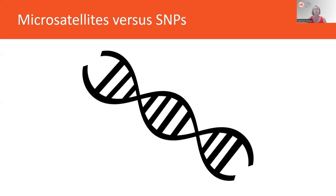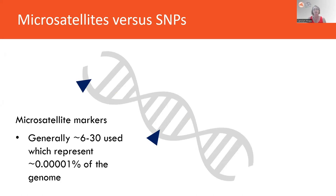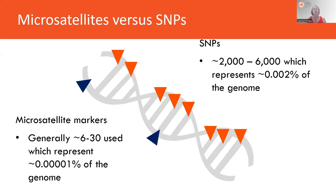Microsatellite markers consist of short tandem repeats where differences in repeat length enable differentiation between individuals. They can be quite difficult to develop and don't occur very often throughout the genome, giving us only scattered points of difference — not really representative of genome-wide diversity. SNPs, on the other hand, are single individual base pairs found along the genome, generally developed in the tens of thousands, and can be quite informative about genome-wide diversity.